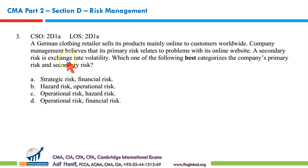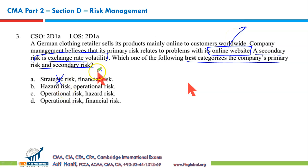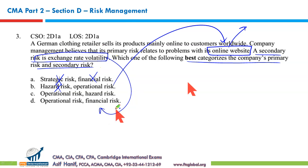A German clothing retailer sells its products mainly online to customers worldwide. Company management believes that its primary risk relates to problems with the online website, and a secondary risk is exchange rate volatility. Which of the following best characterizes the company's primary and secondary risk? The online website issue is not a strategic, financial, or insurable/hazard risk — it's an operational risk. Exchange rate volatility is a financial risk. So the two risks are operational risk and financial risk, making D the correct option.